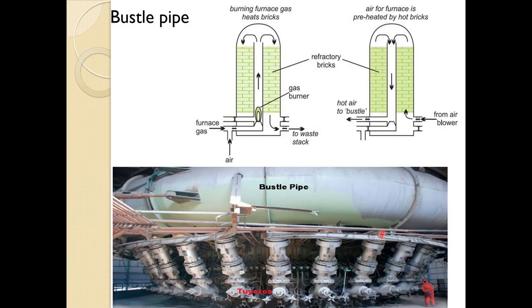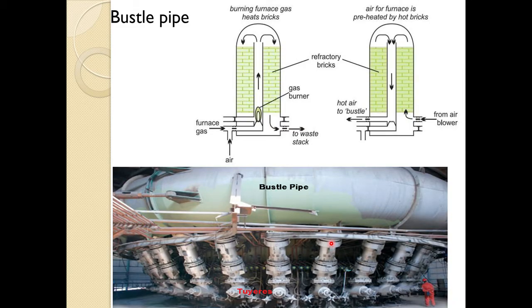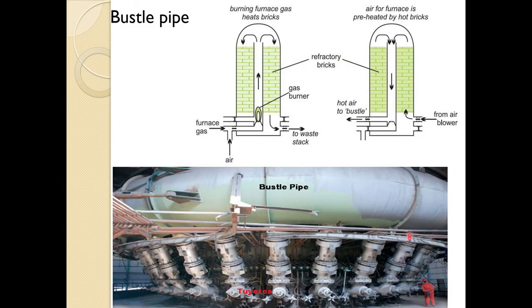There are about 30 to 40 tuyeres around the circumference of the blast furnace, and it is necessary that all tuyeres have the right pressure and deliver the right amount of gas or fuel. If one tuyere has less flow and another has high flow, it creates operational problems. The bustle pipe ensures that in all tuyeres the pressure and feed rate are maintained — that is the very important function of the bustle pipe.